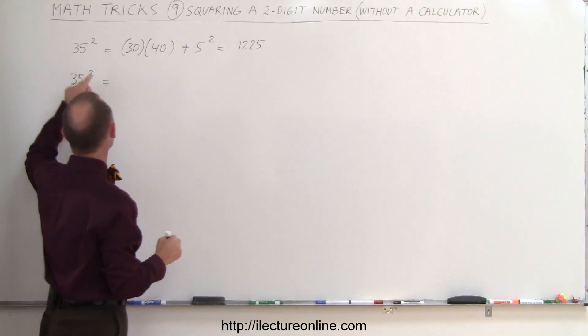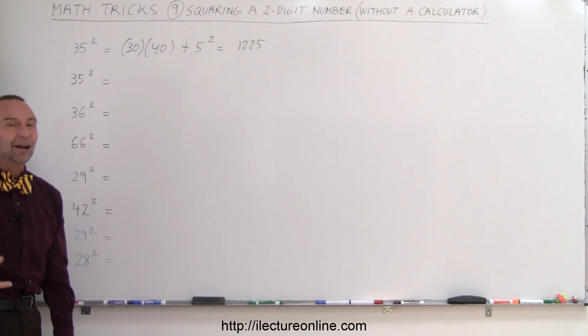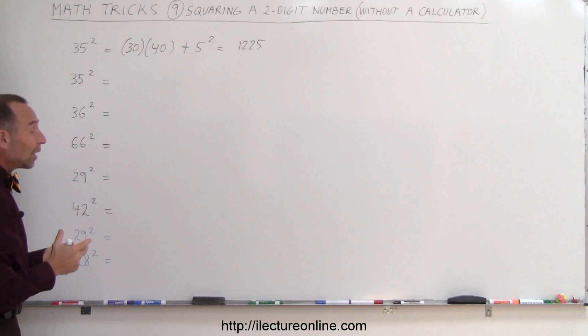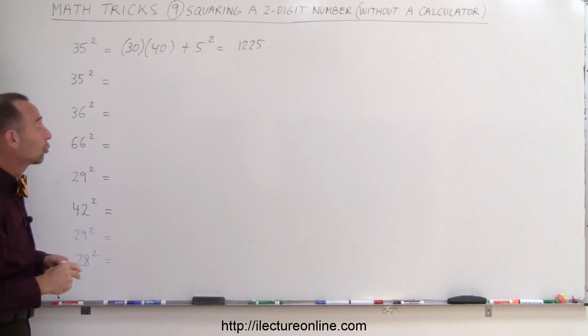So you can do that in your head real quick. You say, okay, that is 30 times 40, that's 1200, plus 5 squared, that's 25, 1225. All right, another way to do that in a more general sense is when you have a two-digit number that you're trying to multiply or trying to square, I should say.